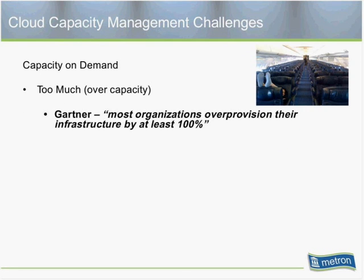If you have too much capacity, consider what Gartner has stated over the past couple of years: because of the lack of capacity management initiatives, most organizations have over-provisioned their infrastructure by a hundred percent. They have significant wasted capacity just sitting out there — and it's not just physical hardware. It also means heating, cooling, and electrical costs that all factor into too much over-capacity.